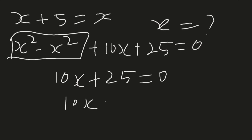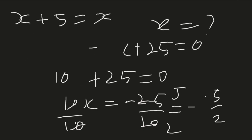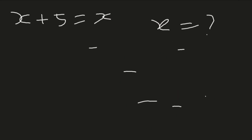So 10x equals negative 25, and the value of x is negative 5 over 2.